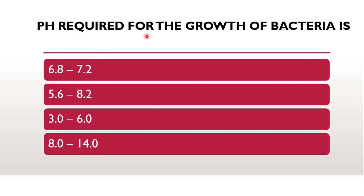Next question: pH required for the growth of bacteria is — 6.8 to 7.2, 5.6 to 8.2, 3 to 6, or 8 to 14? The correct answer is 6.8 to 7.2. pH mostly required is in this range, towards neutrality. However, there are a few bacteria called acidophiles which can grow at highly acidic pH — even pH 1 — and these are called acidophiles.